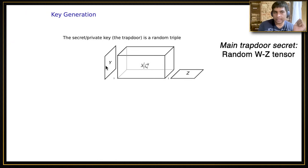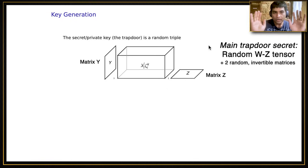The main secret is a random Weyman-Zelevinsky tensor constructed by choosing two random vectors. But there is a little more to this trapdoor. There are two more components, two matrices Y and Z. These are both invertible matrices chosen completely at random, with the only condition that they are invertible. Their role will be to multiply with vectors in the y and z dimensions respectively. This is our secret: one random Weyman-Zelevinsky tensor and two invertible matrices. I haven't told you what the one-way function is yet.